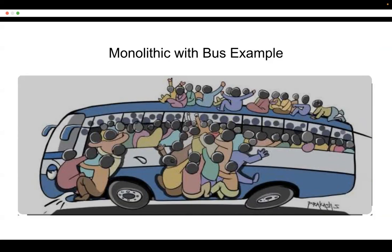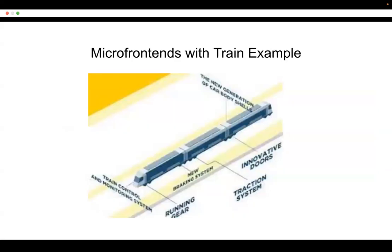In a bus, the driver, conductor, cleaner, and passengers — everyone is at a single point. If you expect a bus to have a sleeper, an AC coach, and other functionalities all in a single bus, it looks overloaded. That is monolithic architecture — features become too much to handle in one place.